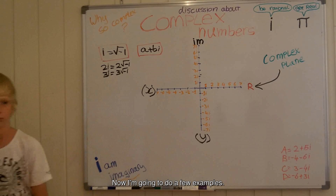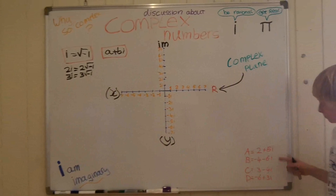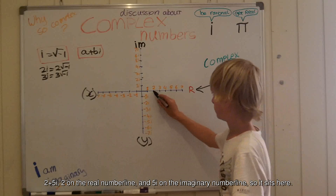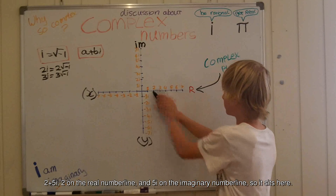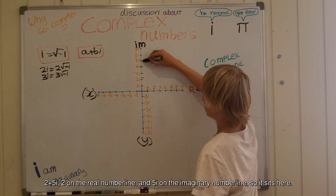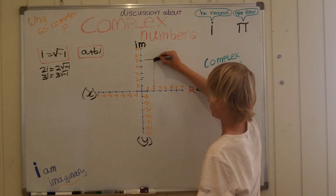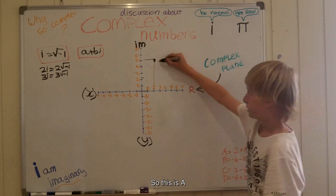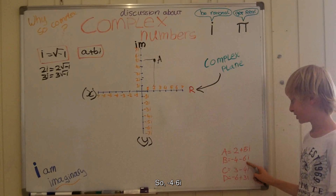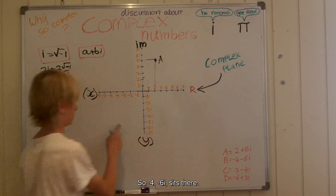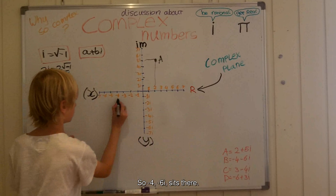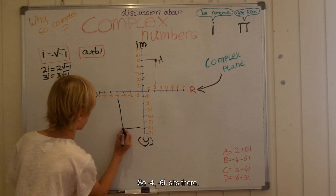Now I'm going to do a few examples. So 2 plus 5i: 2 on the real number line and 5i on the imaginary number line, so it sits here. This is point A. Point B is minus 4 minus 6i, so that's minus 4 on the real axis and minus 6i on the imaginary axis — it sits there.